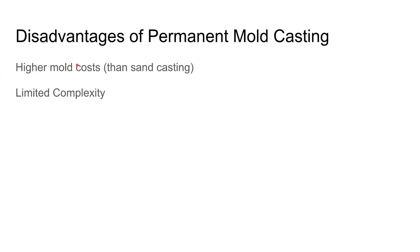The higher upfront cost of the mold means you need high production volume for this to be cost effective — if you're making only one or two parts, permanent mold casting is not the right choice. Tooling cost is higher, and part complexity is limited. It's well-suited to simpler shapes like pipe fittings, brackets, and similar parts.